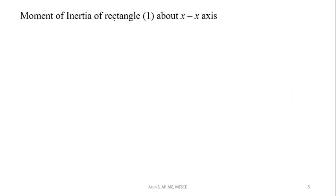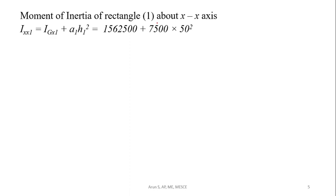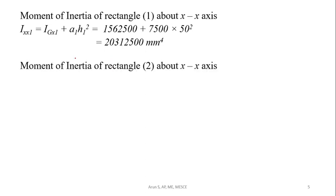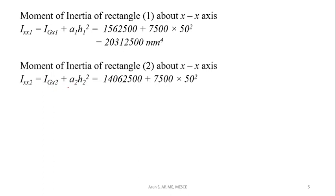Now, the moment of inertia of rectangle 1 about the X-axis using the parallel axis theorem: Ix₁ = I_gx1 + A₁·h₁². Similarly, the moment of inertia of rectangle 2 about the X-axis: Ix₂ = I_gx2 + A₂·h₂². Applying the parallel axis theorem, we will get these values.